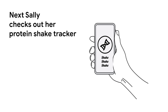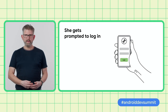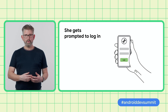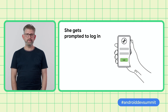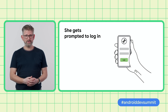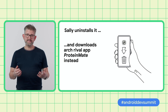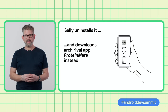Undeterred, Sally opens up her protein shake tracker app. Sally loves protein shakes, and she likes to rate them and track how much nutrition she's getting. When she opens the app, Sally gets prompted to log in. But Sally doesn't remember her login, and she hasn't got a password manager. She's pretty sure she's changed her email address since then too. She's kind of stuck. Sally uninstalls it and decides to try out the great new app, Protein Mate, that has been heavily advertised on her Instagram feeds.